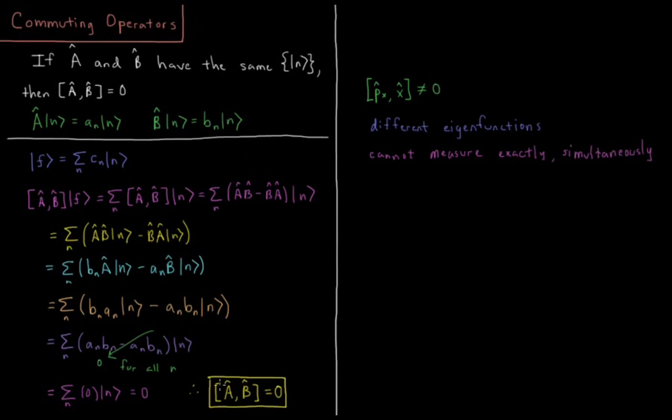So this means that the operator, which is the commutator of A and B, is equivalent to a zero operator. Meaning that the commutator of A and B is zero, meaning that A and B commute with one another.